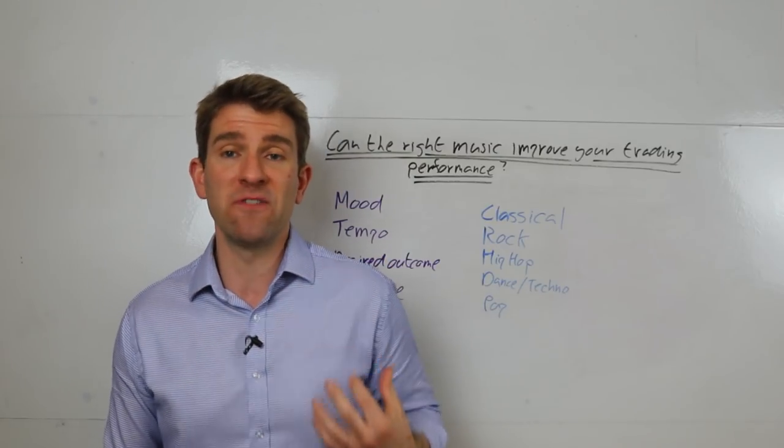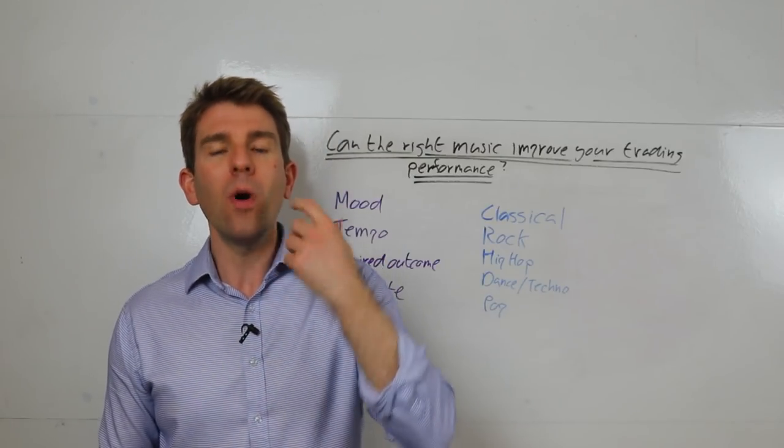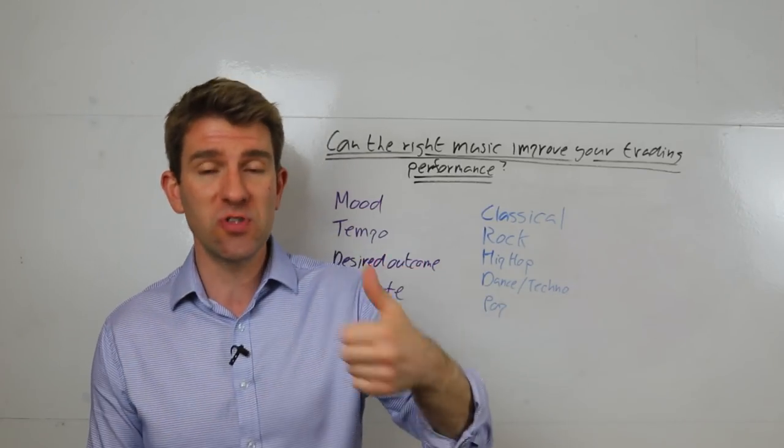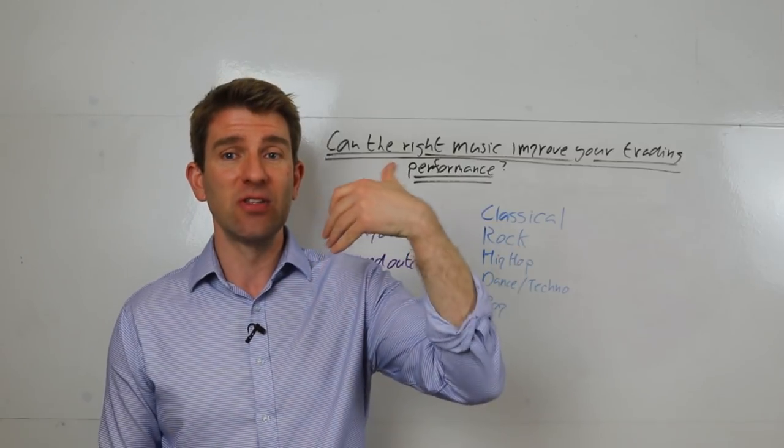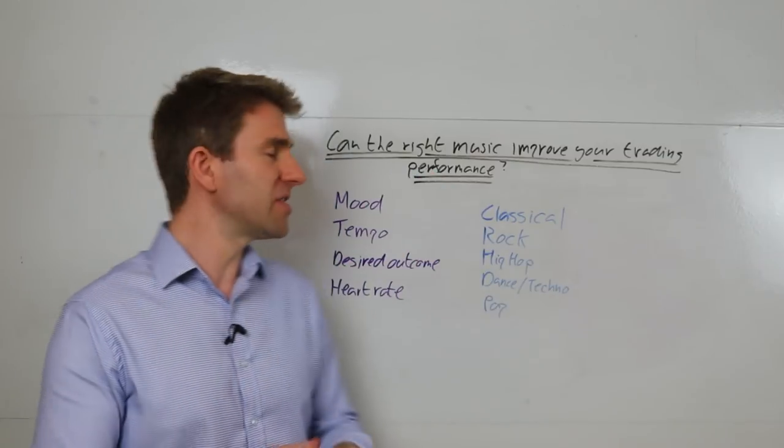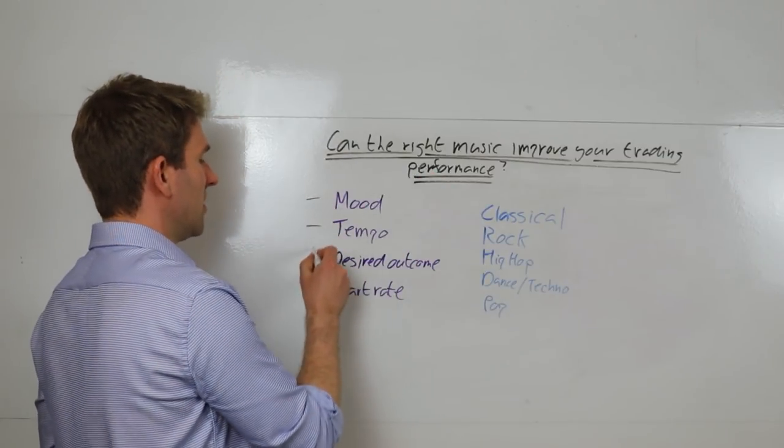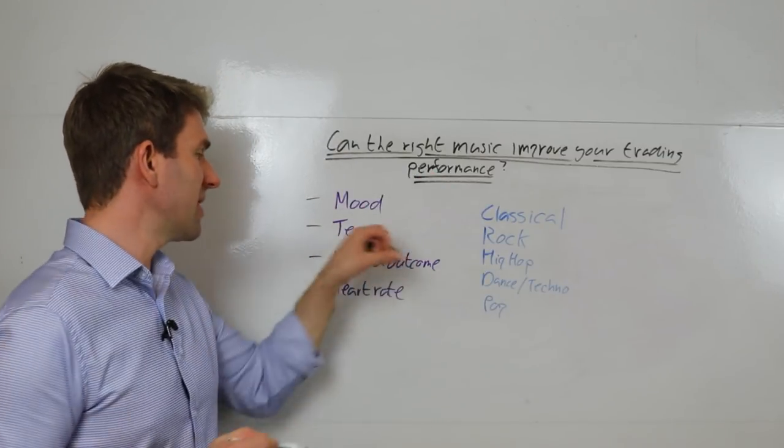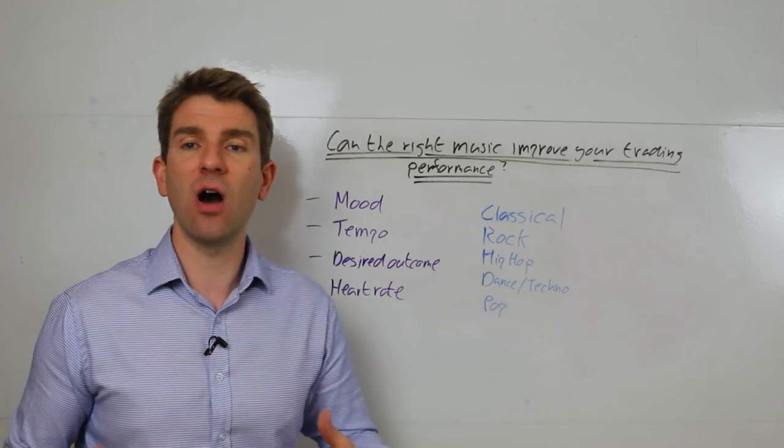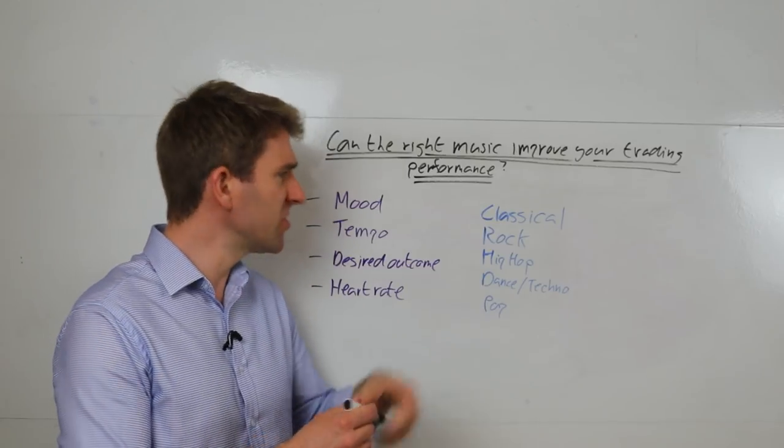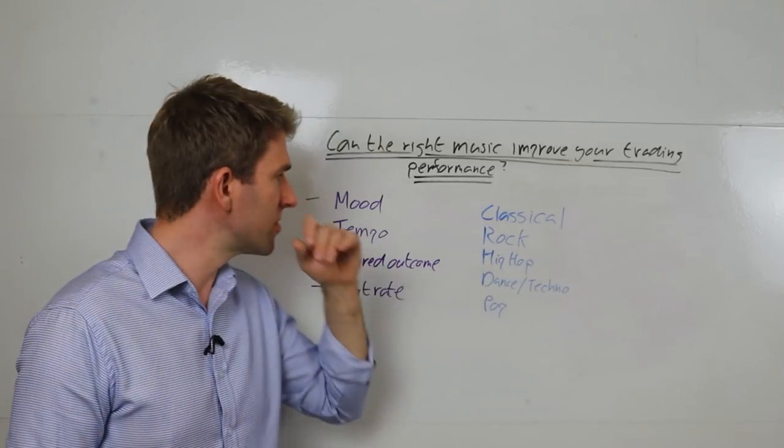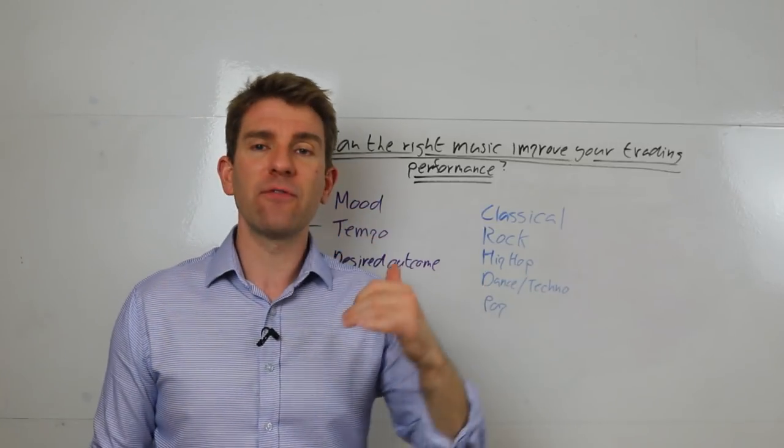Why could we not use music as a tool to get us into the physical state that we know is optimum for the trading environment we're in? Some of the things we need to look at here are: the mood we're trying to achieve, the tempo of the music, the desired outcome of what we want to get out of it, and potentially our heart rate or physiology, and some of the genres we can look at. There's obviously loads more there, but these are the main ones.